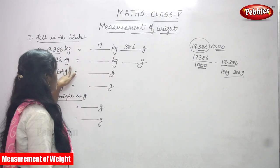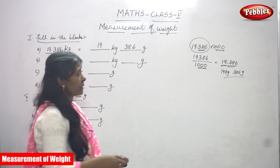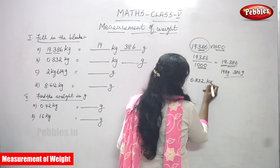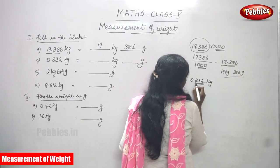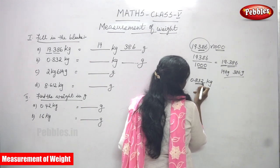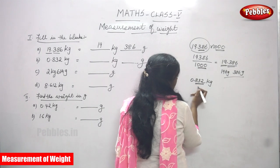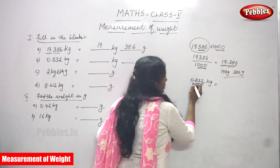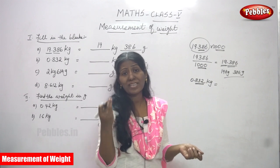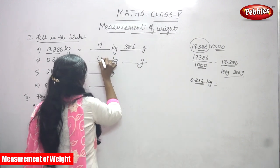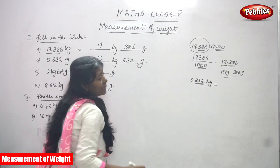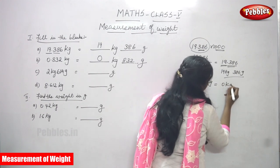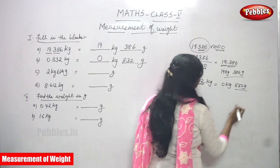Next sum: 0.832 kilogram — convert into kilogram and gram. After the decimal point there are three digits. In the kilogram place there is only zero, so you write zero kilogram. The 832 after the decimal is the gram part. The answer is zero kilogram and 832 gram.